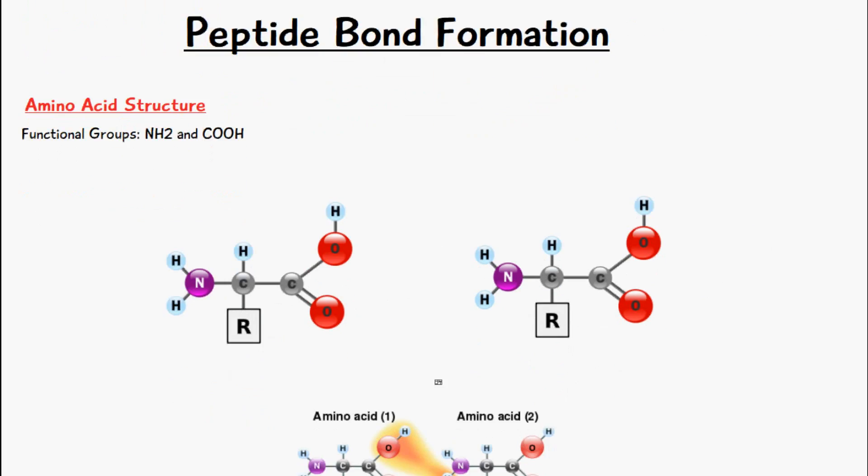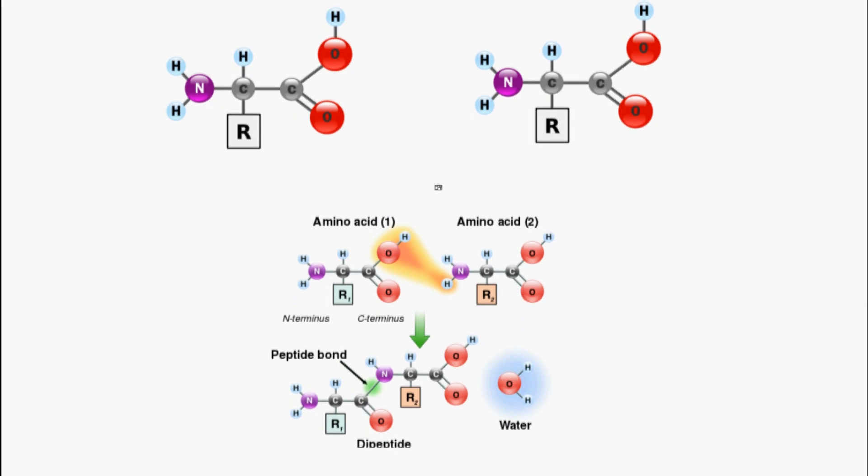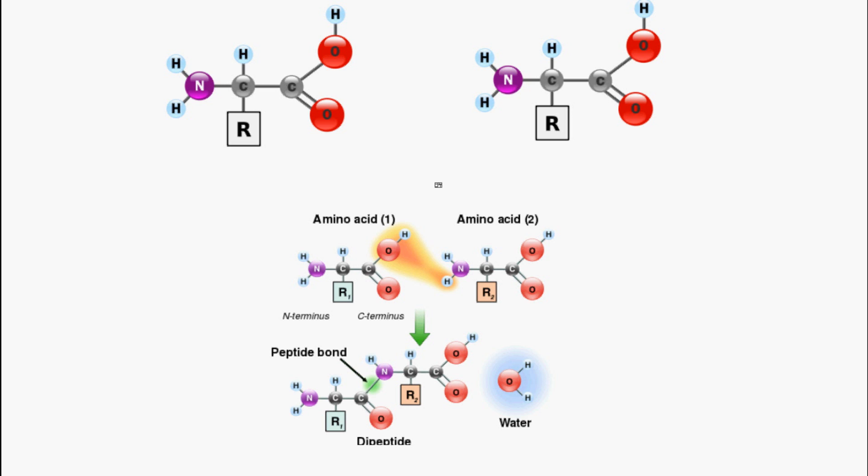So how do we join these amino acids together? Well, we're going to take the OH group from this carboxyl group from one amino acid and we're going to take the hydrogen from this amine group on the second amino acid. So these are going to get removed in the form of water because it's an oxygen and a hydrogen and we have an extra hydrogen, so we make H2O.